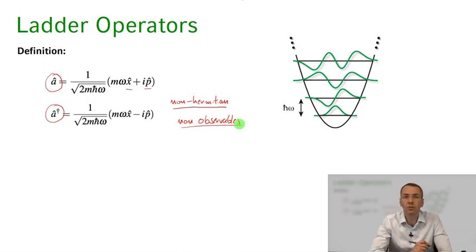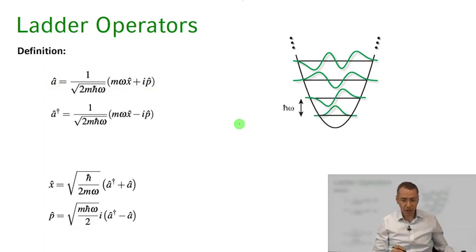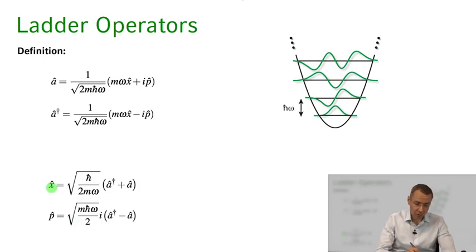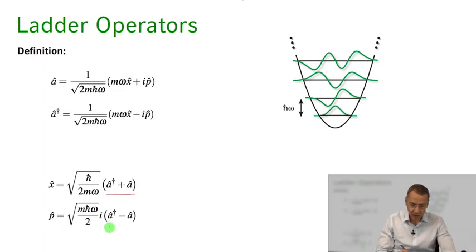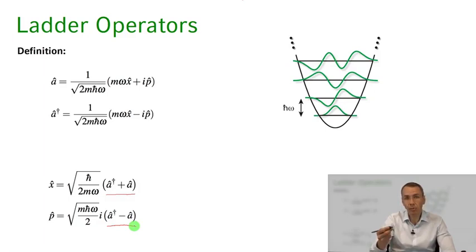As we'll see, we can form observables out of these ladder operators a and a-dagger. When we have a and a-dagger we can go back and form the position operator again as a superposition of the ladder operators, and the momentum operator as a superposition of the ladder operators as well. In one case it's the sum of the a-dagger and a term, and in the momentum case it's the difference between the a-dagger and a terms. So we can use either the position-momentum operators or the ladder operators to express the same physics.